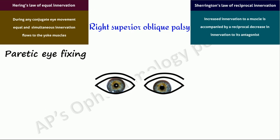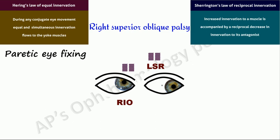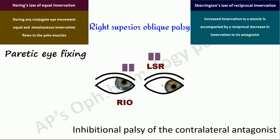In addition to this, when the paretic eye is fixing and moves into the field of action of the right inferior oblique — that is, levo-elevation — since the right inferior oblique is already contracted due to unopposed action, this muscle needs to contract very little in levo-elevation. So by Hering's law, this reduced innervation also flows to its yoke muscle, the left superior rectus. The left eye is thus hypotropic in levo-elevation. This underaction of the left superior rectus by both these mechanisms is referred to as inhibitional palsy of the contralateral antagonist, as the left superior rectus is the contralateral antagonist of the right superior oblique — that is, the yoke muscle of the ipsilateral antagonist.